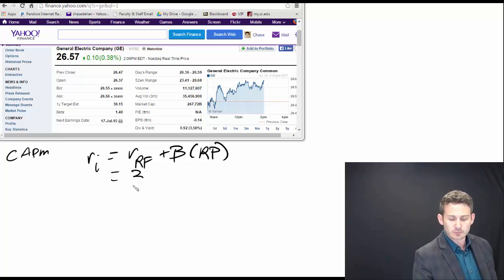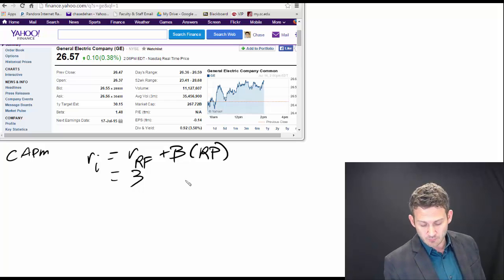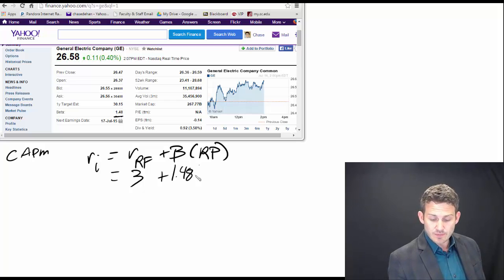We're just gonna throw some numbers in here. Currently, we have approximately a 3% risk-free rate. We have a beta which is generated right off of this table here at 1.48. And then we have a risk premium. Let's just say our risk premium right now is at five percentage points.